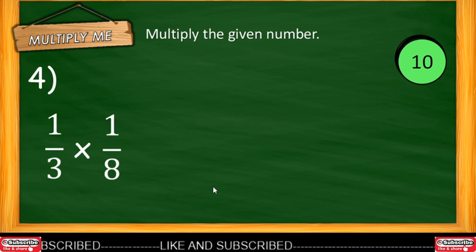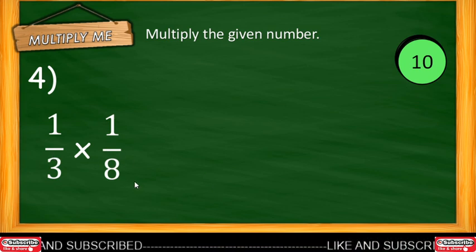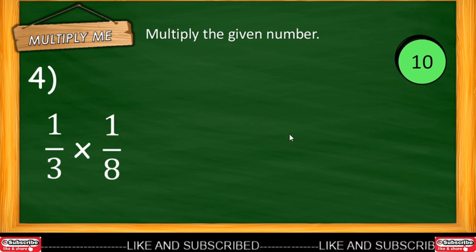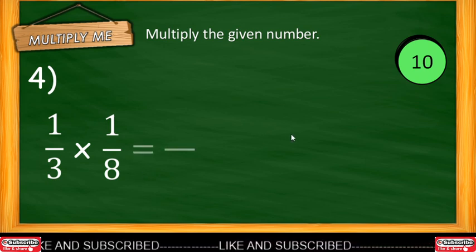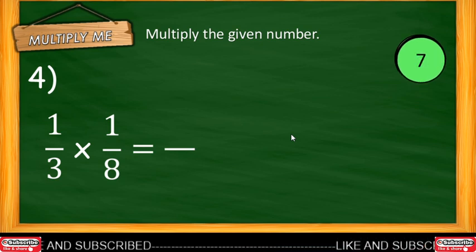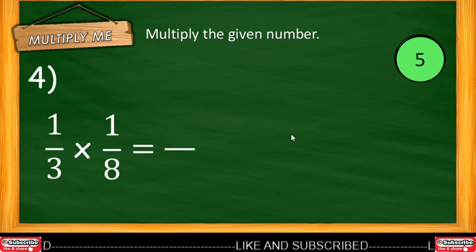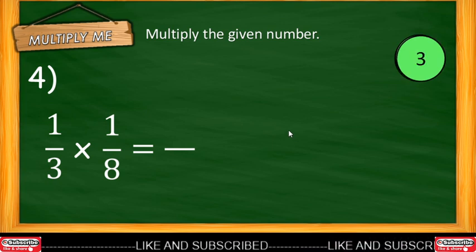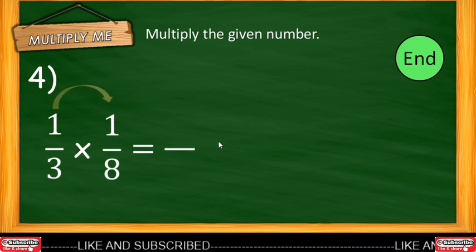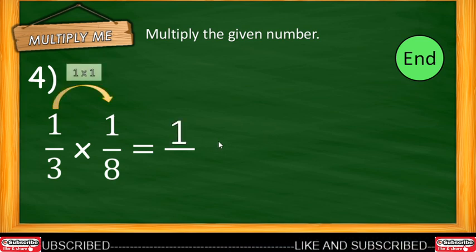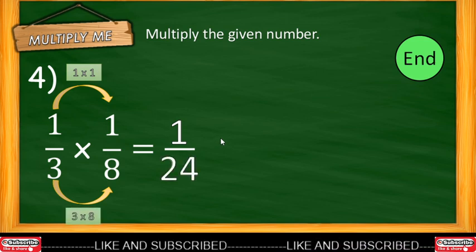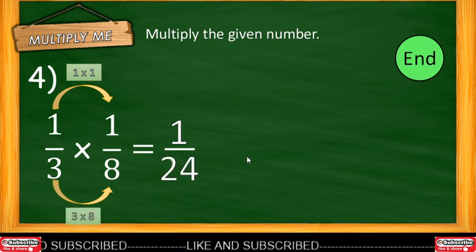Example number 4: fraction by a fraction. One-third multiplied by one-eighth. You have 10 seconds to answer. Timer starts now. Time is up. Let's reveal the answer. 1 multiplied by 1 — the answer is 1. 3 multiplied by 8 — the answer is 24. So the correct answer is one twenty-fourth.